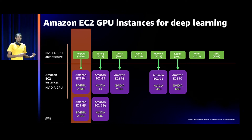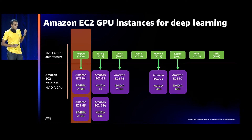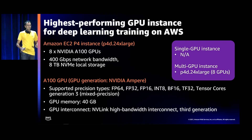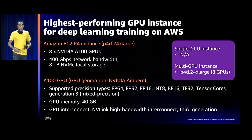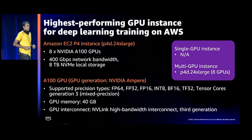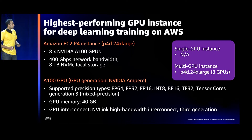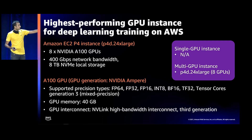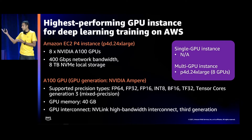Starting with the latest generation of GPUs: the P4 instance type and the G5 instance type. If you want the fastest GPU instance on AWS and you have large datasets and the compute needs that can take advantage of these GPUs, then choose the P4 instance. It only comes in one size with eight GPUs — you can't get a single A100 GPU on AWS today; you get eight of them.